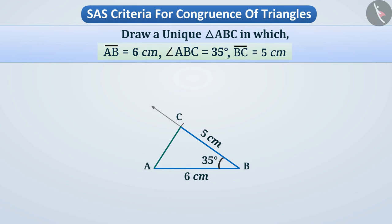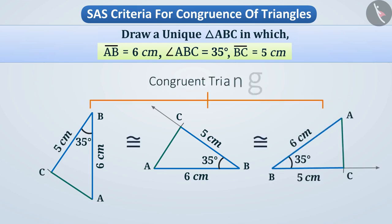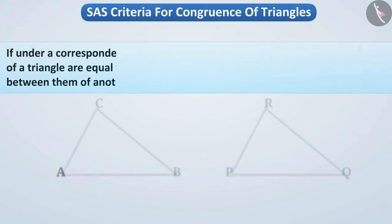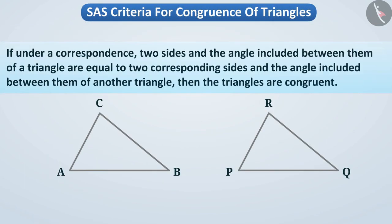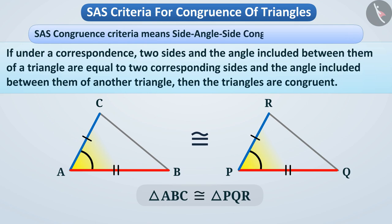By using the same measurements, we will get congruent triangles in each situation. We use this knowledge to check the congruency of triangles. If, under a correspondence, two sides and the angle included between them of a triangle are equal to two corresponding sides and the included angle of another triangle, then the triangles are congruent. This is known as the SAS congruence criteria — side, angle, side.